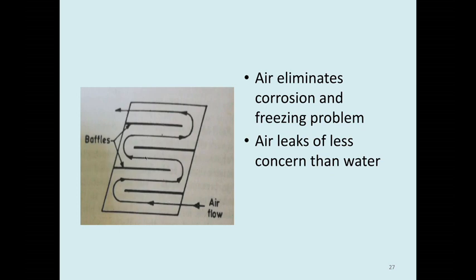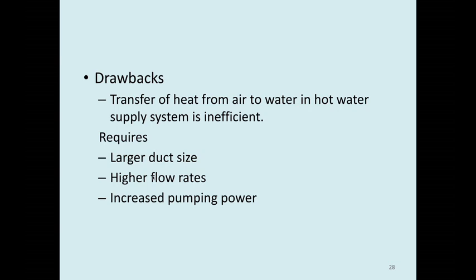In a solar air heater there are no pipes for flow. Instead, a baffle is used — thin sheets that direct air flow through the supposed area. These baffles change the circulation of air in the system. One drawback is that the transfer of heat from air to water in hot water supplies is inefficient.